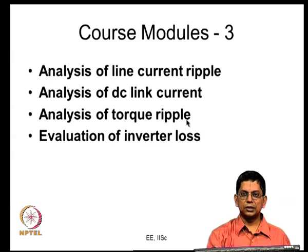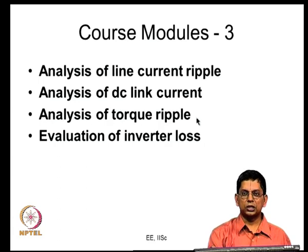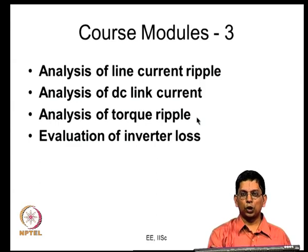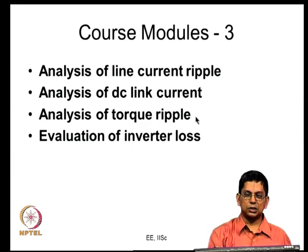We also considered the analysis part for the two-level inverter: how to calculate the RMS current ripple, how to calculate the DC link current, and some ways of estimating ripple torque. When running an induction motor from sinusoidal voltage there is only a steady pulsating torque, but when fed from an inverter there are harmonic components that result in harmonic fluxes and currents that produce pulsating torque.